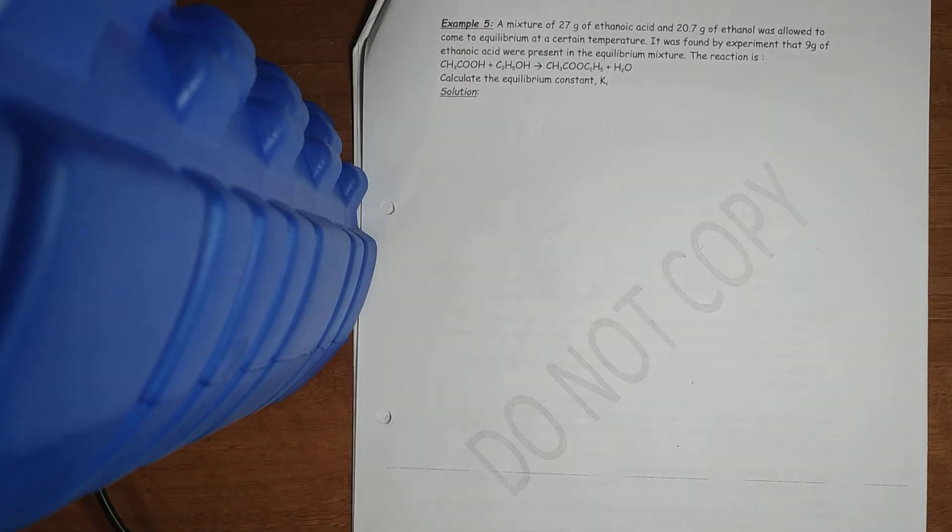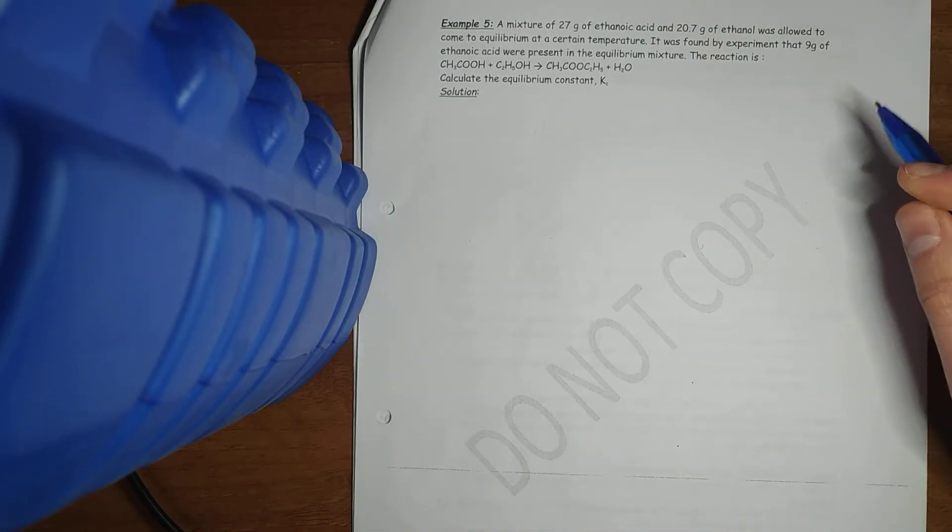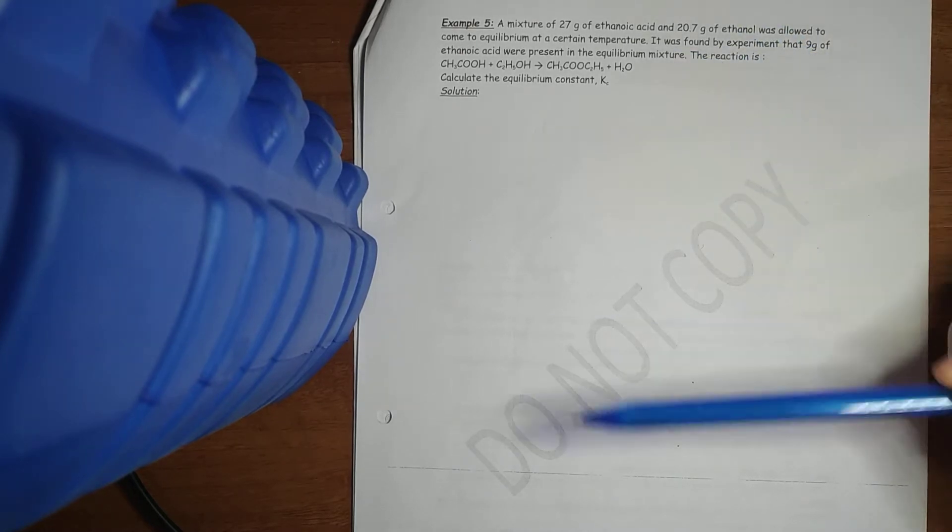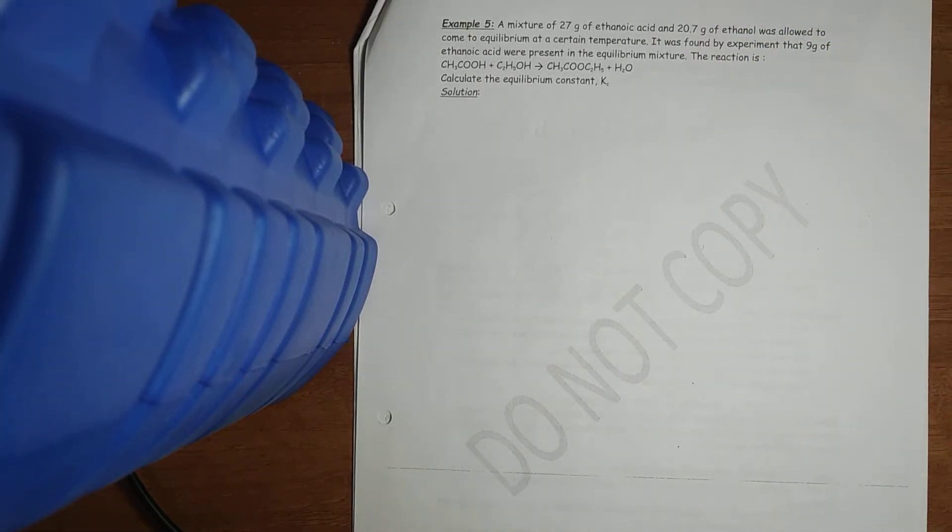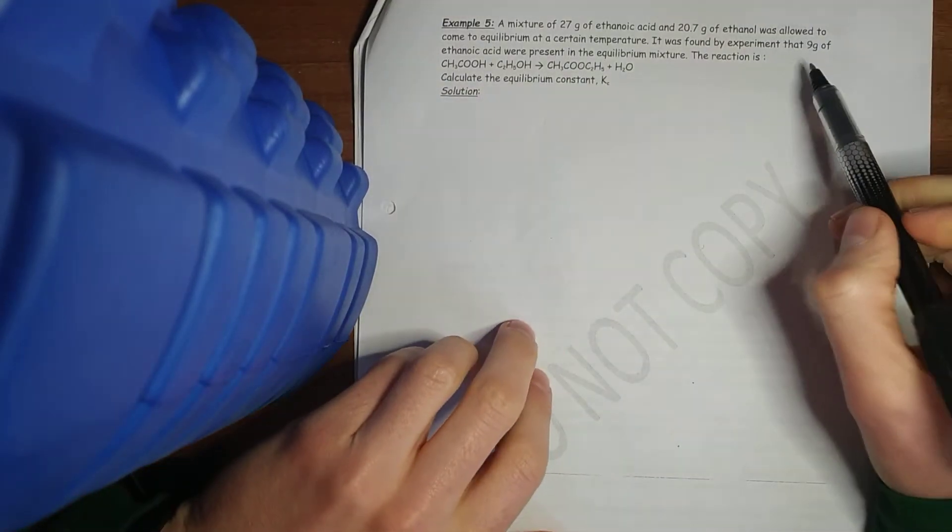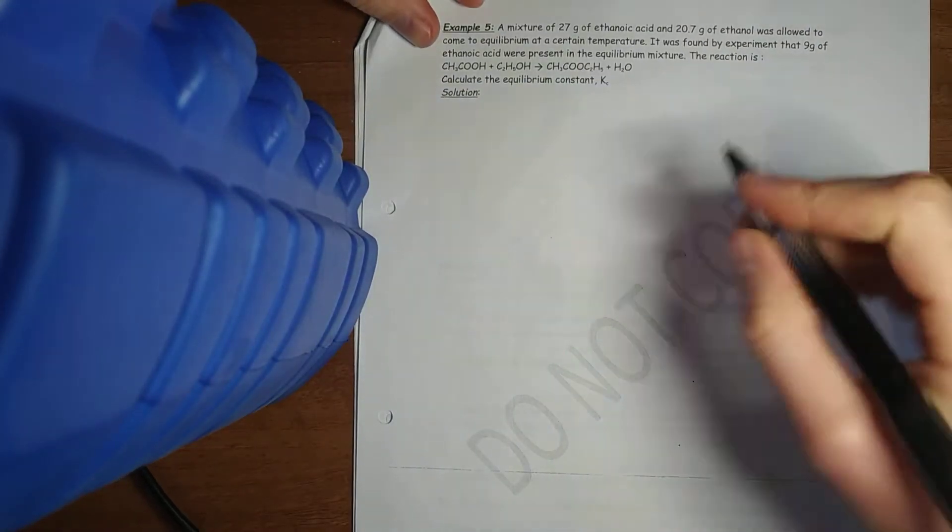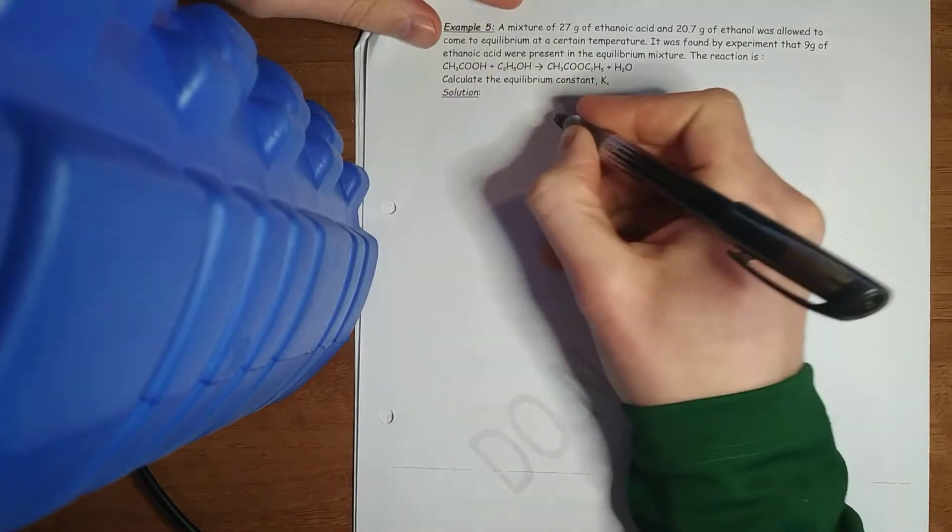Next one here. Mixture of 27 grams of ethanoic acid and 20.7 grams of ethanol was allowed to come to equilibrium at a certain temperature. Always says temperature because remember KC is temperature dependent. So first, write out the equation.